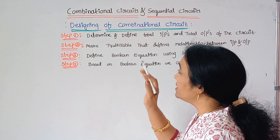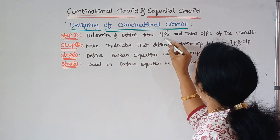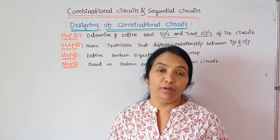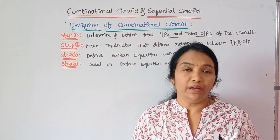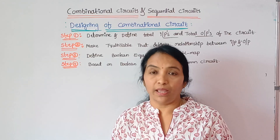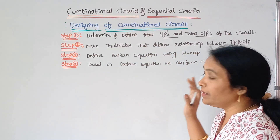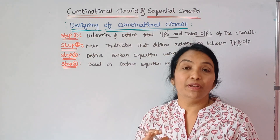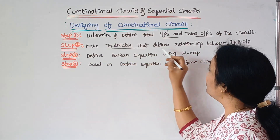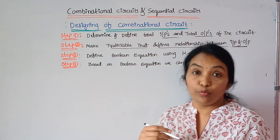First step: determine and define the total number of inputs and outputs of the circuit. For this problem, it is two-bit binary with two outputs — sum, carry — and given two variables. The next step: write the truth table to define the relationship between input and output.